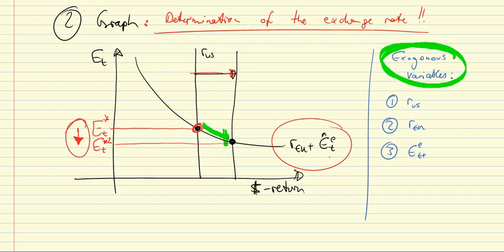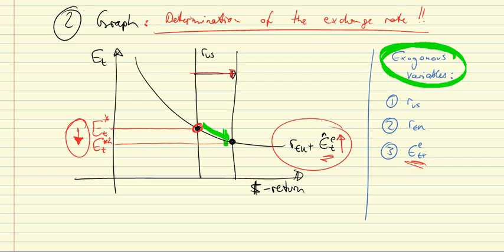This appreciation implies higher expected depreciation, which runs up against the fixed expected level one period hence — E_{t+1}. That is what, in this simple model, determines the exchange rate.